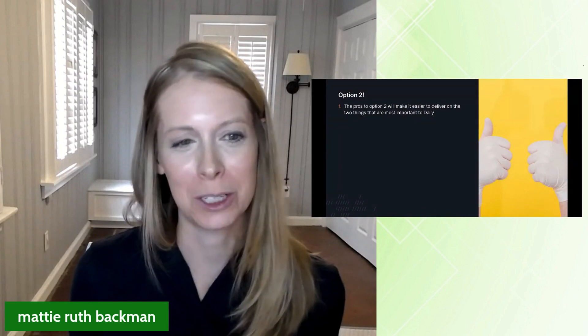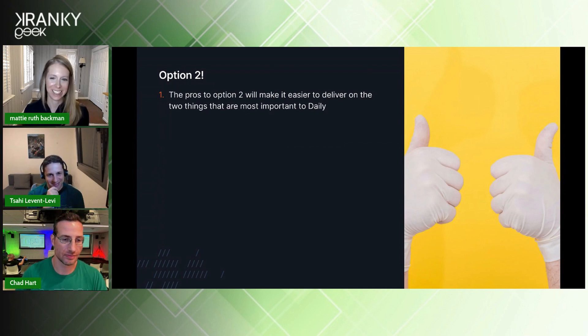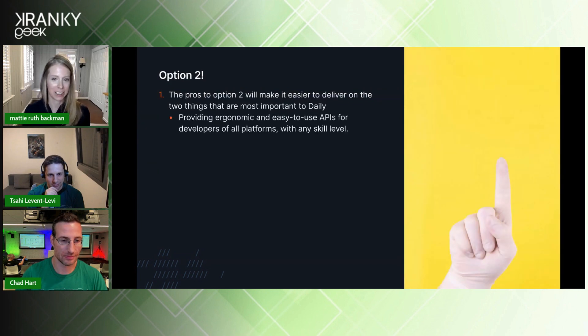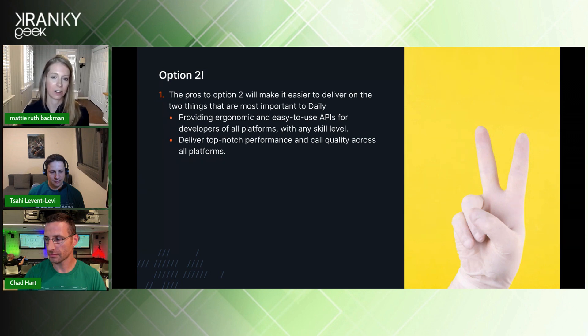So we chose option two. What made us really lean that way? The pros of option two make it easier to deliver on Daily's two most important things. One, providing ergonomic and easy-to-use APIs for all developer customers — this option lets us get the API right and keep it consistent across all platforms. And two, every performance and quality improvement we make now and in the future will immediately apply to all platforms, helping us ensure top-notch performance and quality across all supported platforms.